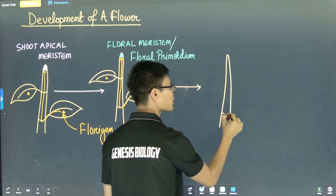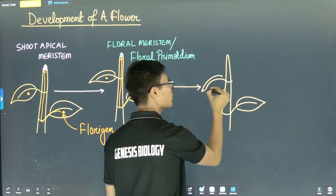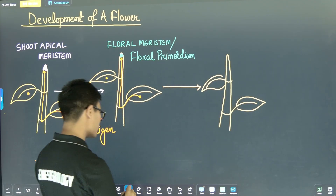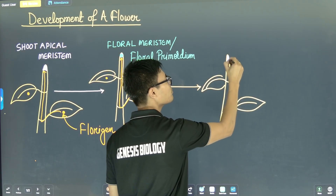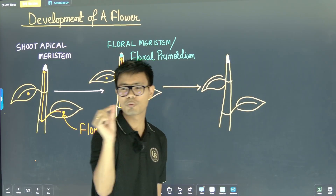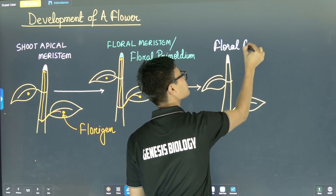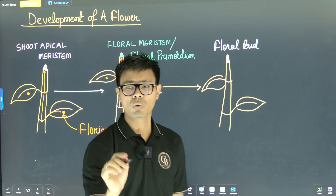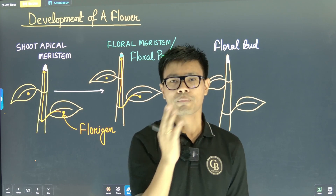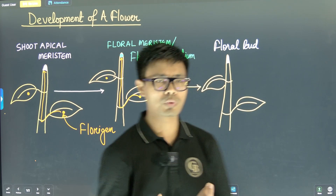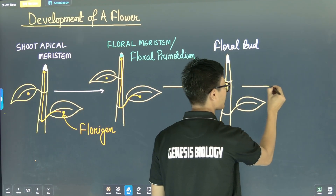So this is the stem once again. These are the nodes. On the nodes are born the leaves. The floral meristem gradually changes into a floral bud. A floral bud is a form of a flower. Just to let you know, this is one line mentioned in the NCRT — the floral bud is a form of a flower.